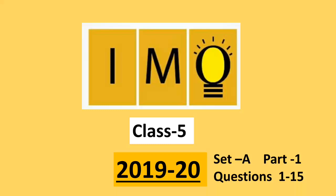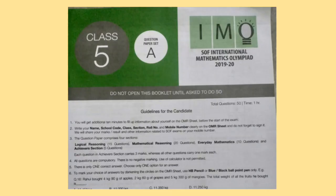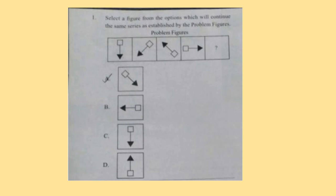Welcome to our channel Olympiad Trainer. Here I am with the question paper of IMO, that is International Mathematics Olympiad exam for class 5, year 2019-20 Set A. The question paper comprises four sections: logical reasoning, mathematical reasoning, everyday mathematics, and achiever section. In this video we are going to solve the first section, logical reasoning. New users please subscribe our channel Olympiad Trainer for more such solved question papers. So let's start with the first question.